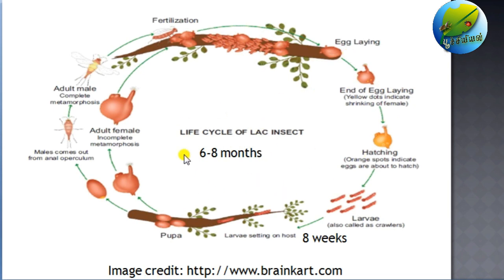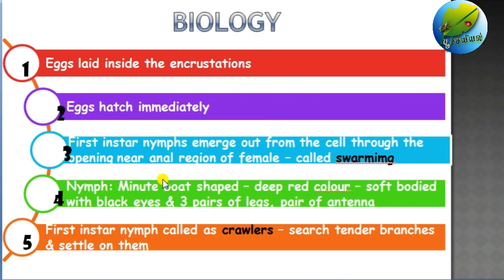The encrustation gets longer and longer as days pass by, and the females lay eggs inside the shell itself — and the cycle continues. This total cycle ranges between six to eight months, depending on the different strains, which we will look into in coming lectures. In summary: eggs are laid inside the encrustation, the eggs hatch immediately — which is called viviparous — and the first instar nymphs emerge from the cell through the opening near the anal region of the female, which is the only gap in the shell. This emergence is called swarming.